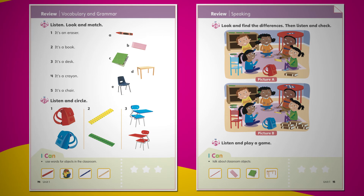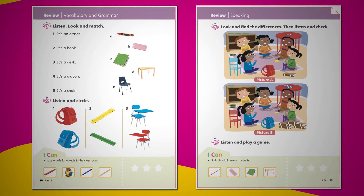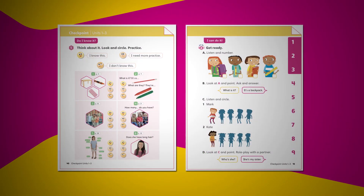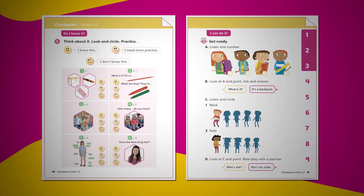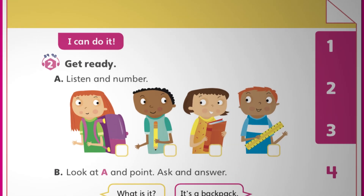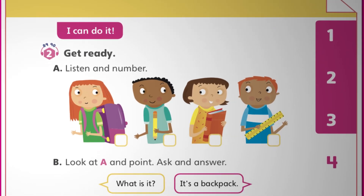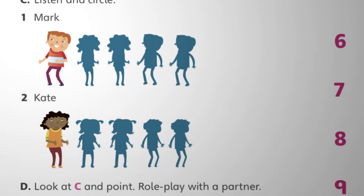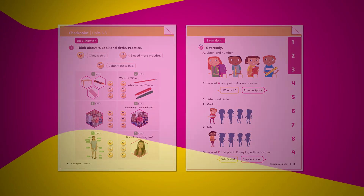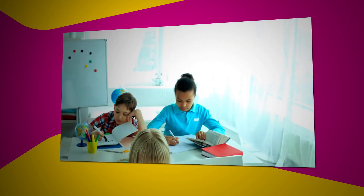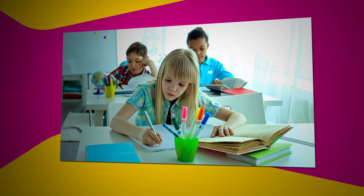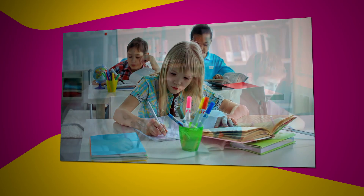Self-assessment activities and 'I can' statements aligned to the GSE allow students to reflect on their progress. At the checkpoint, students reflect on what they know every three units. The Get Ready task helps identify gaps in learners' knowledge of the key language points, so that teachers can provide a review as needed. Vocabulary from the unit is practised again using cut-out cards, and target grammar is recycled in the context of a dialogue. Students use the language they know to carry out a mini portfolio task.